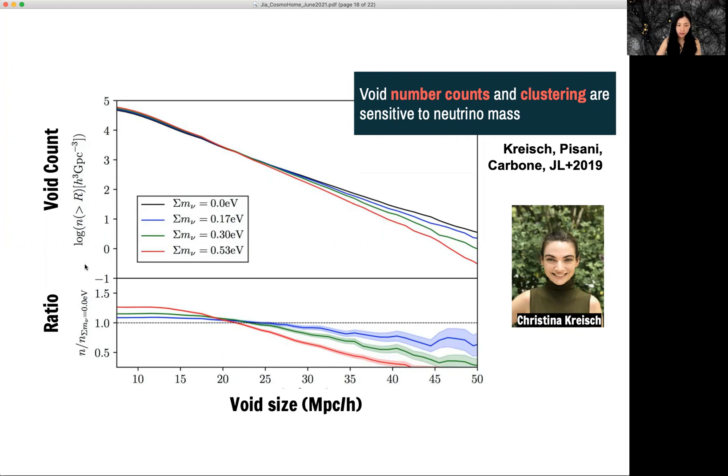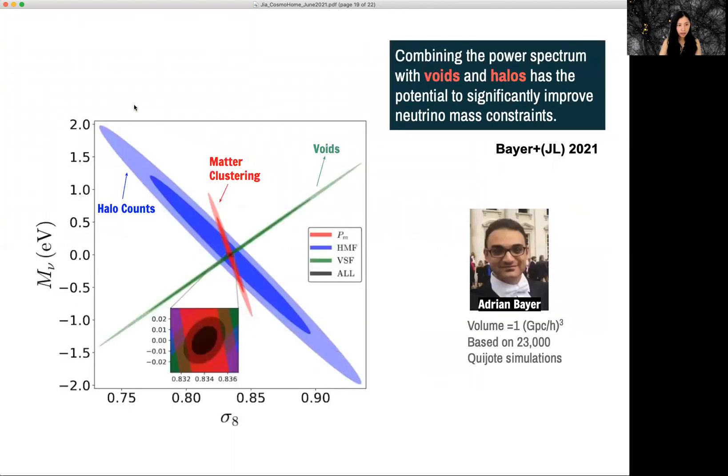it is the void count. We found that when we vary neutrino masses, we see less large voids and more smaller voids.